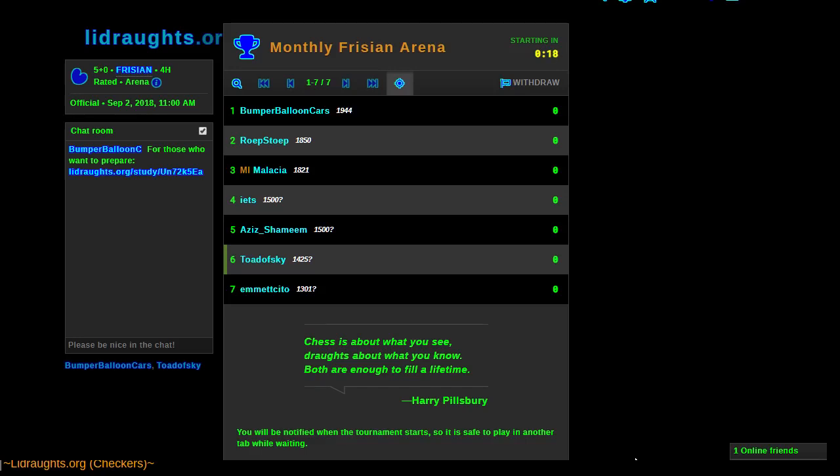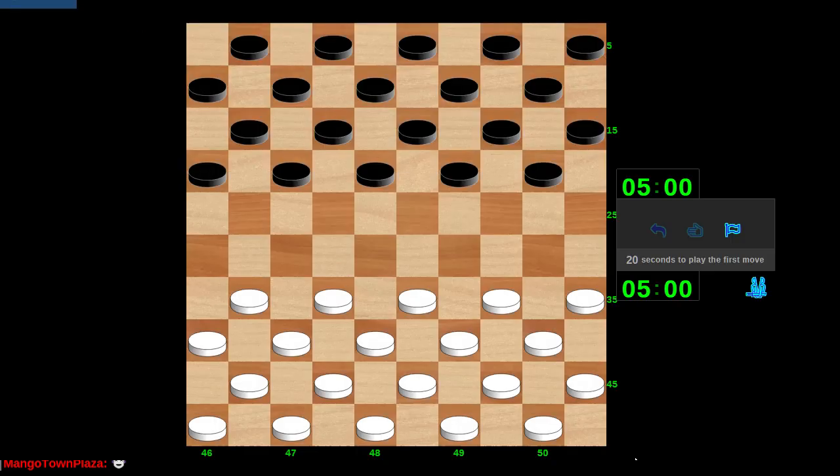Welcome back. Today we're playing in the Monthly Frisian Arena. I'll do my best to try to commentate in terms of the notation that draughts players typically use. I can't say I'm particularly good at that notation, however, so bear with me. And if I win this, something is rigged.